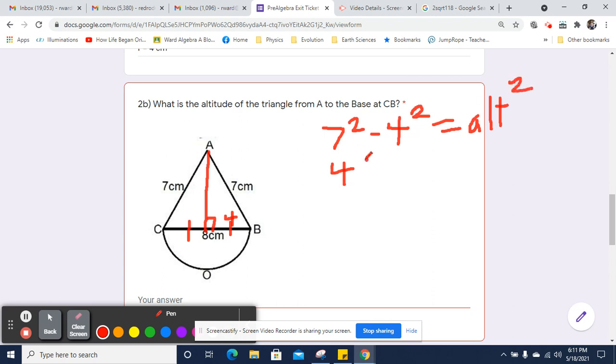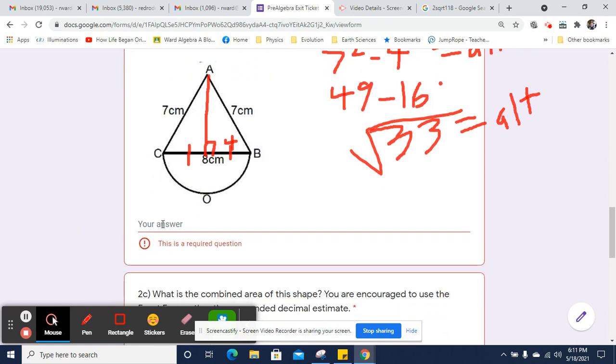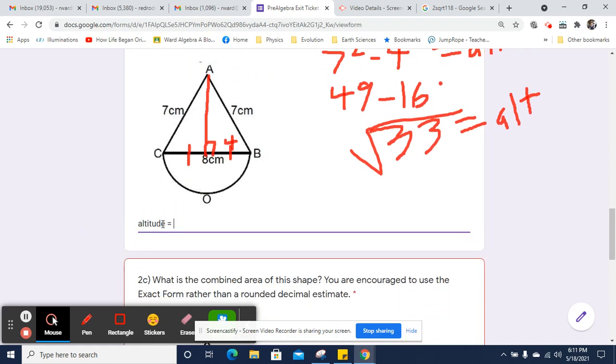So that's going to be 49 minus 16, and that's going to equal 33. 33 is going to equal altitude squared. So if that equals altitude squared, altitude will equal the square root of 33, and the square root of 33 is irreducible, so the altitude equals the square root of 33 centimeters, since that's the units we're working with here.